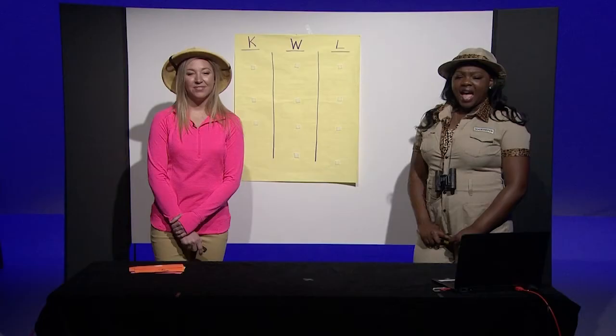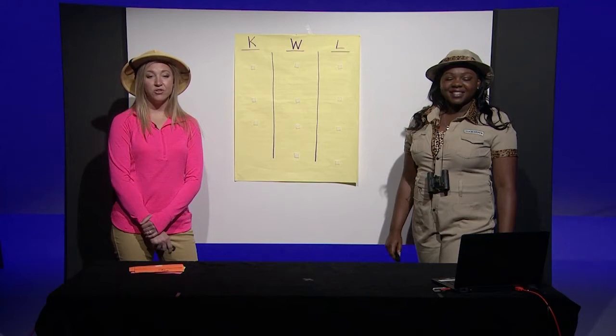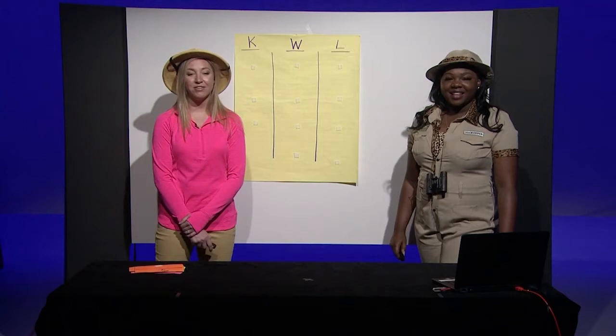How do ants communicate or share information with one another? They use their antennae. The antennae have sensory parts for insects to use when they smell or touch. Today we are going to learn about some other insects and how they communicate.